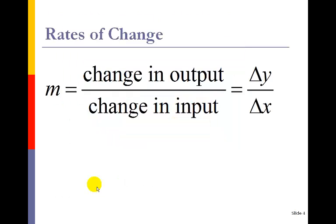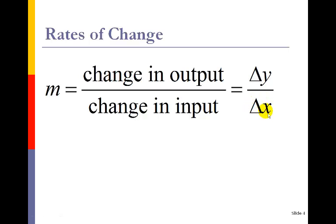What we'd have to do is calculate our rate of change — our slope. Rates of change are the change in output over the change in input, and that's where you get rates of change because we're talking about change. You also have delta y over delta x on the right there. Delta — that little triangle — indicates change, and delta y over delta x is your mathematical equivalent of slope.